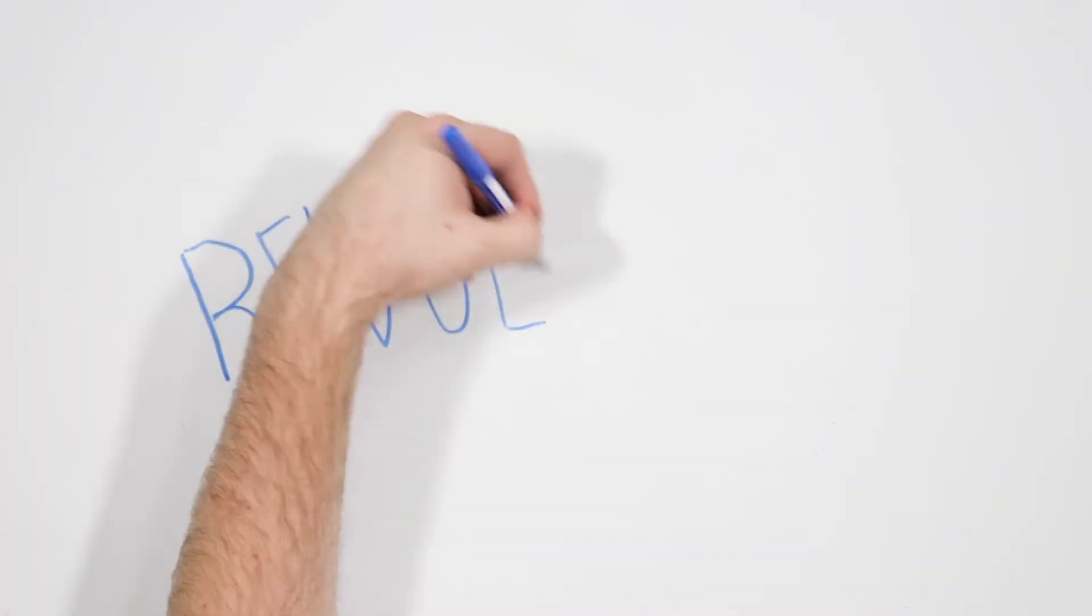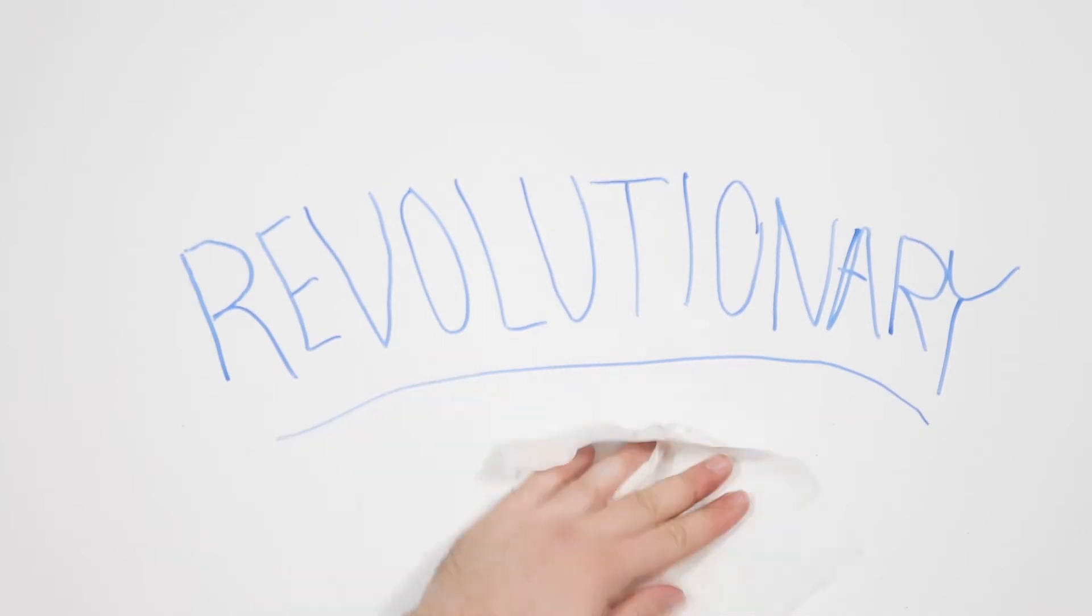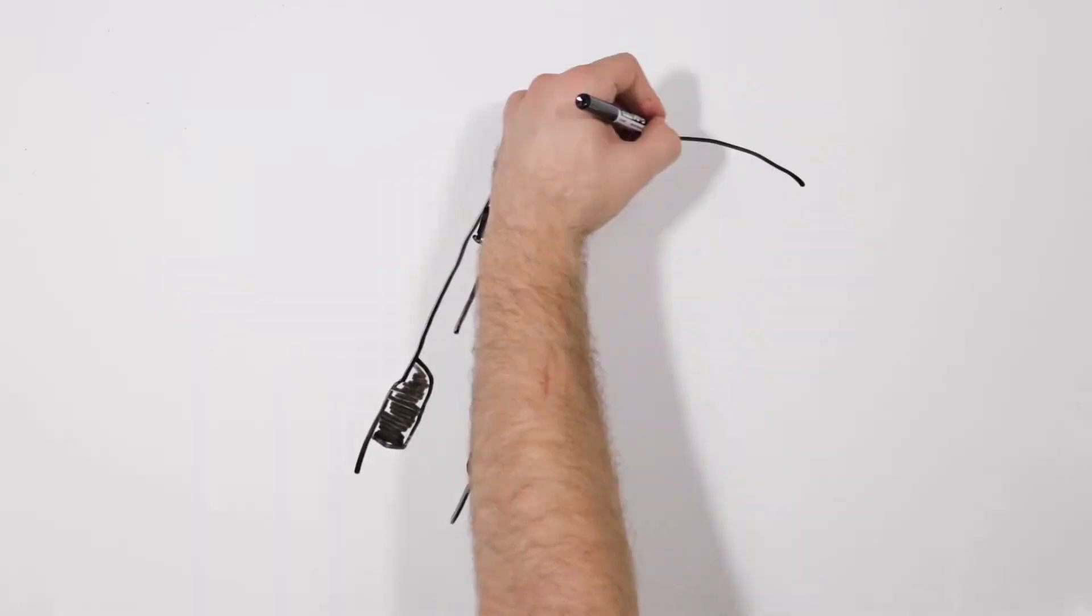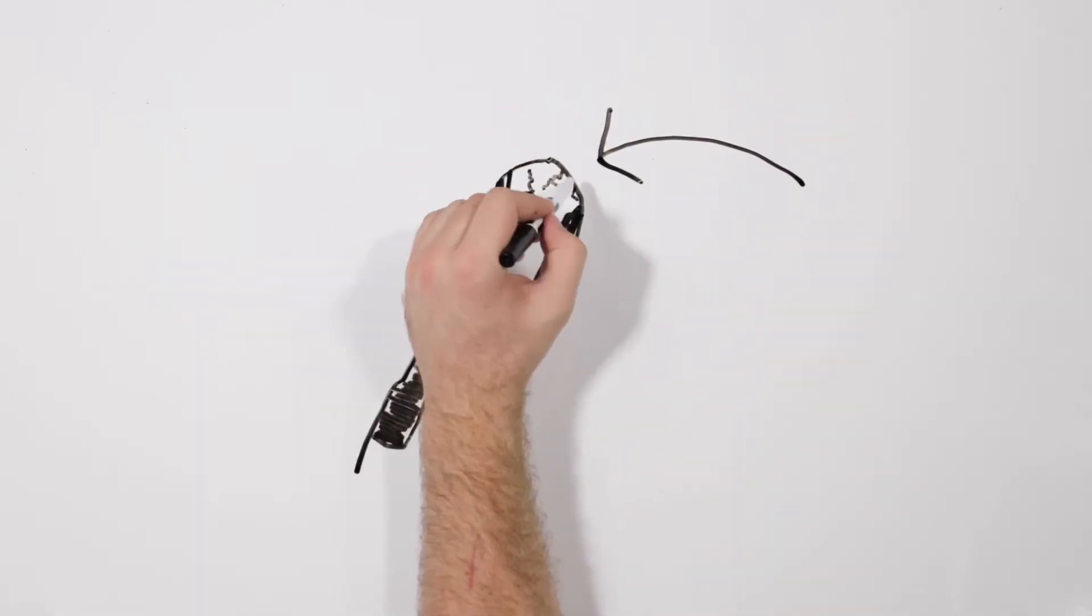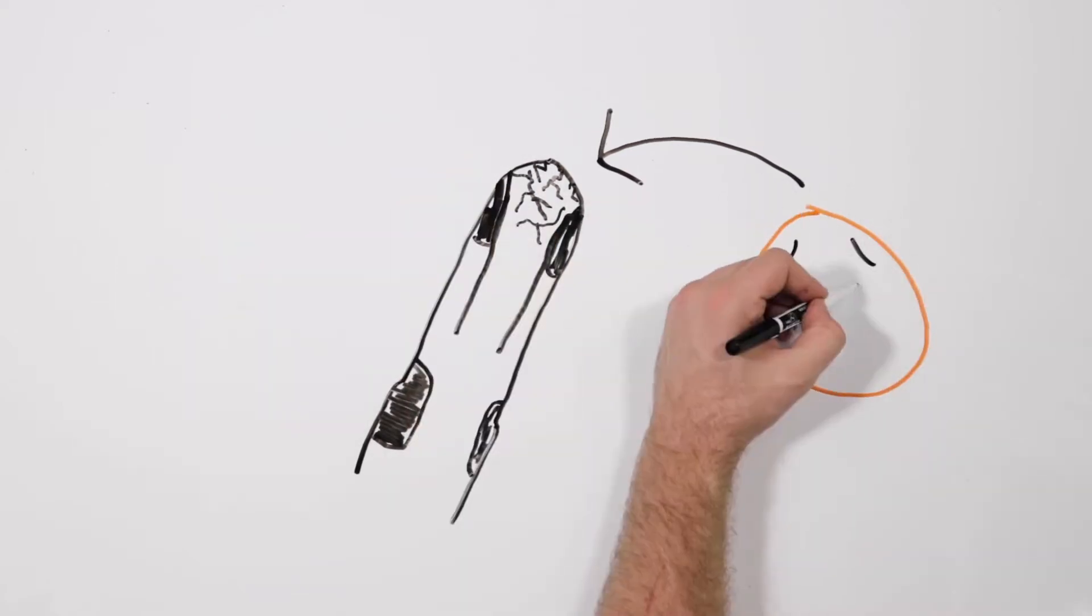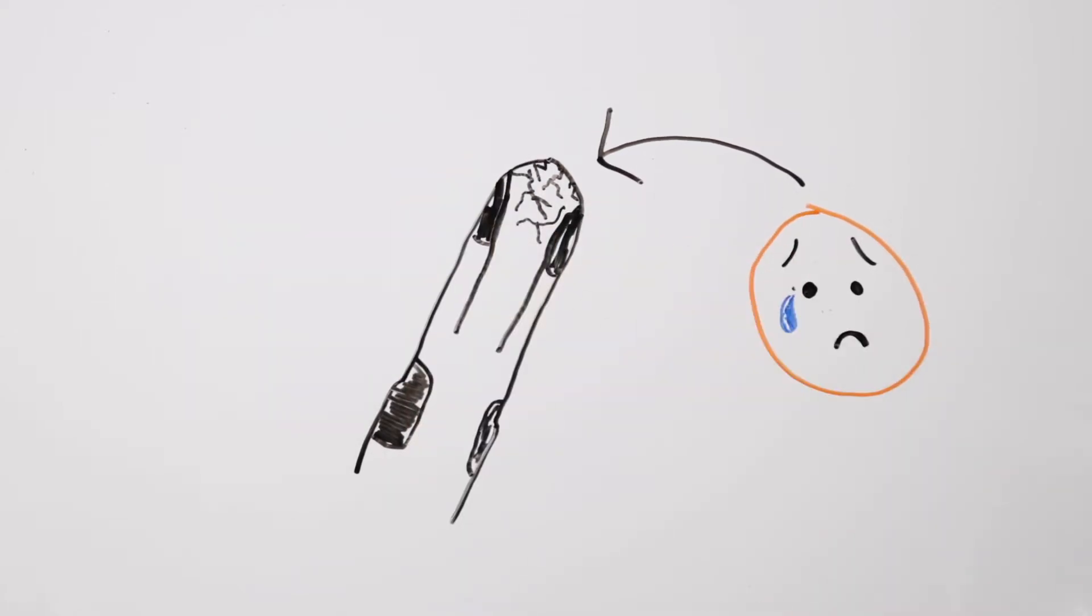Now we're getting to the revolutionary, industry-changing stuff, the cross-center-tipped PCD. When drilling, the chisel tends to take all the punishment and most of the forces in all drilling, which normally breaks down earlier than the outer edges.